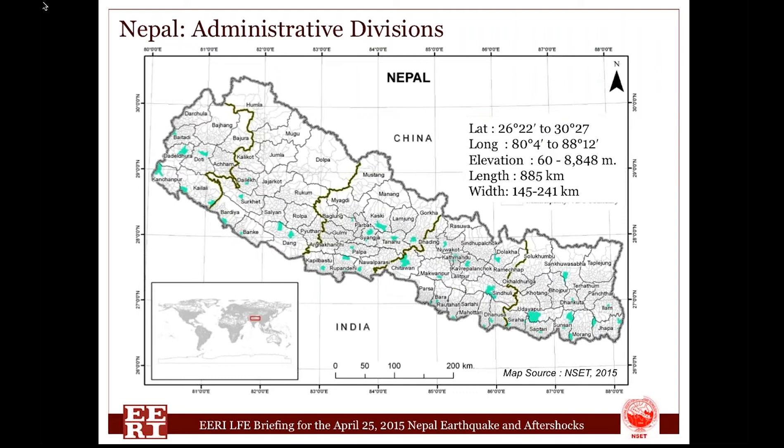Nepal lies in South Asia at the middle part of the long Himalayan region, between China and India. The total land area of Nepal is 147,181 square kilometers, the length of the country is approximately 900 kilometers, and the width ranges from 145 to 241 kilometers.